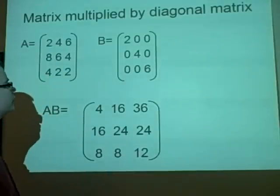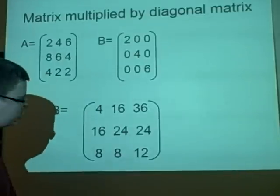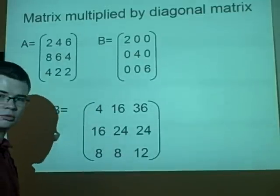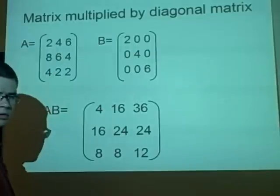And also with this it doesn't matter which way around you multiply, so AB is the same as BA in this case.